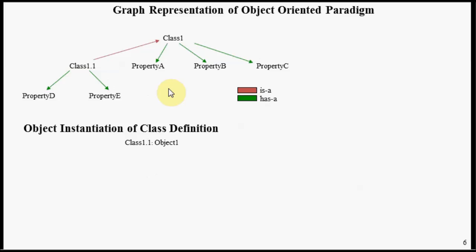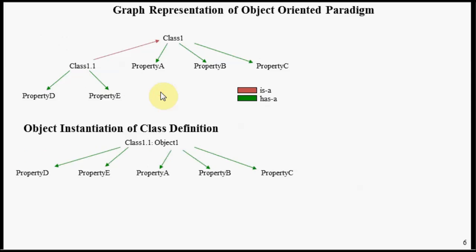Now let's look at what happens if we want to instantiate Class 1.1 — the equivalent object graph. Assuming we want to instantiate Class 1.1 and call that Object 1, we first want to instantiate properties D and E, and then look at this inheritance 'is a' link to inherit properties A, B, and C, which is what you see here.